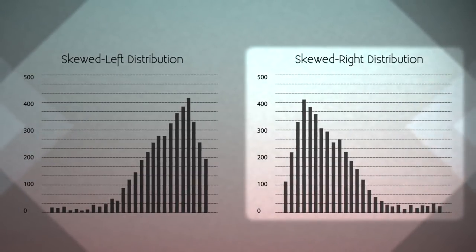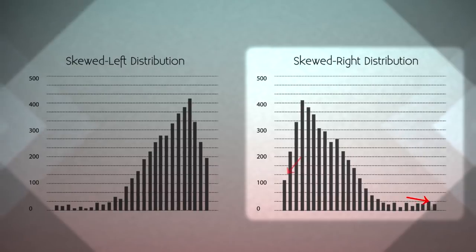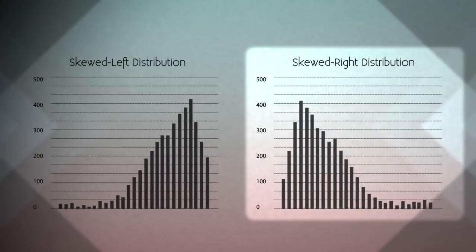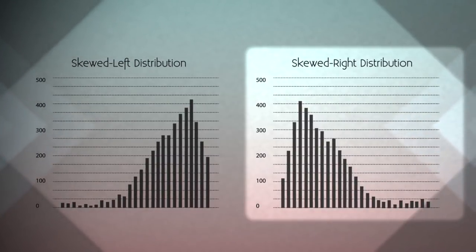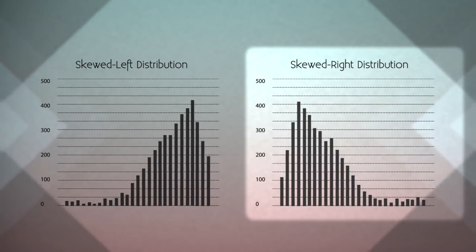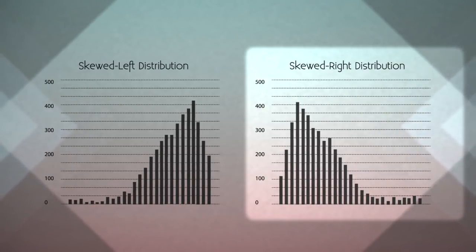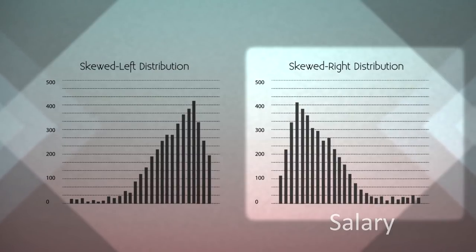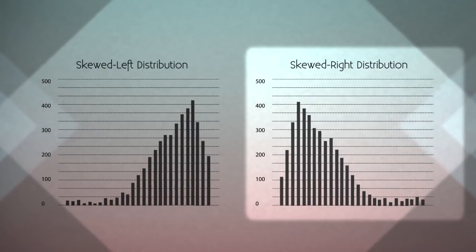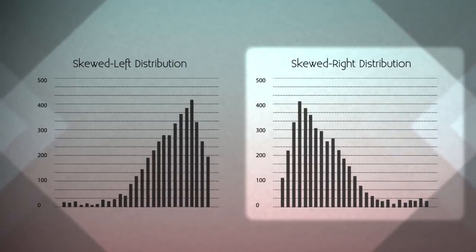A distribution is called skewed right if the right tail — the larger values — is much longer than the left tail. In a skewed right distribution, the bulk of the observations are small to medium, with a few observations that are much larger. A real-life example is salary: most people earn in the low to medium range, with a few exceptions such as CEOs and professional athletes distributed along the long tail of higher values.